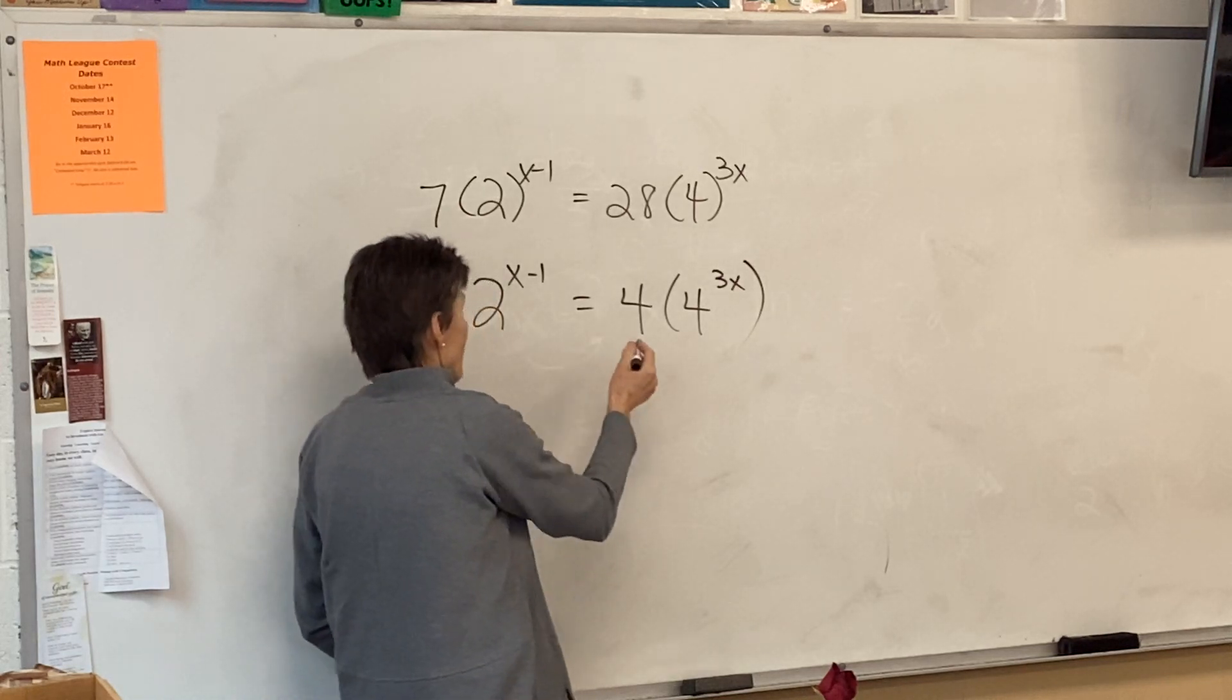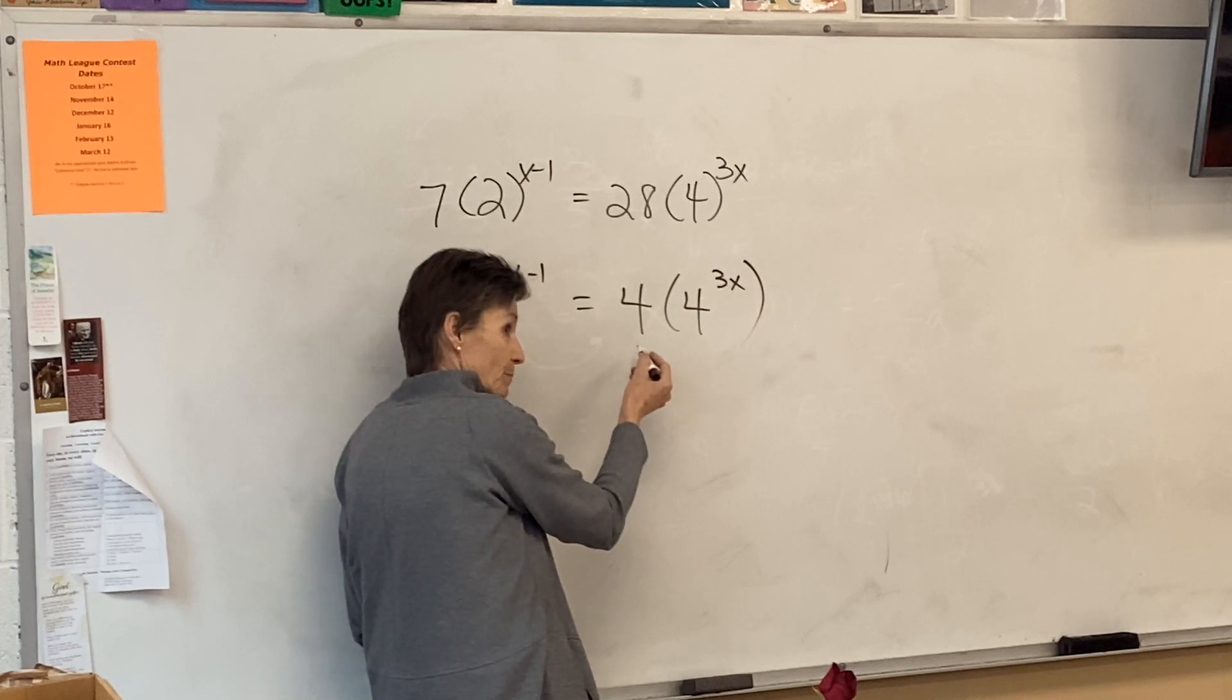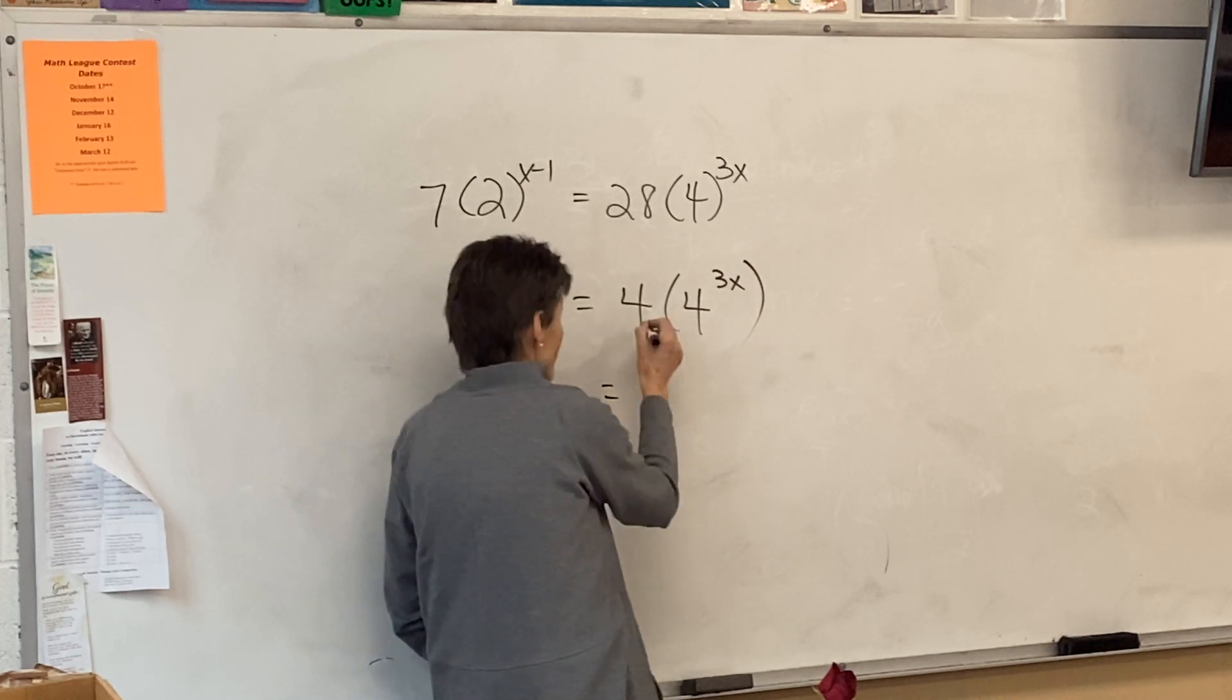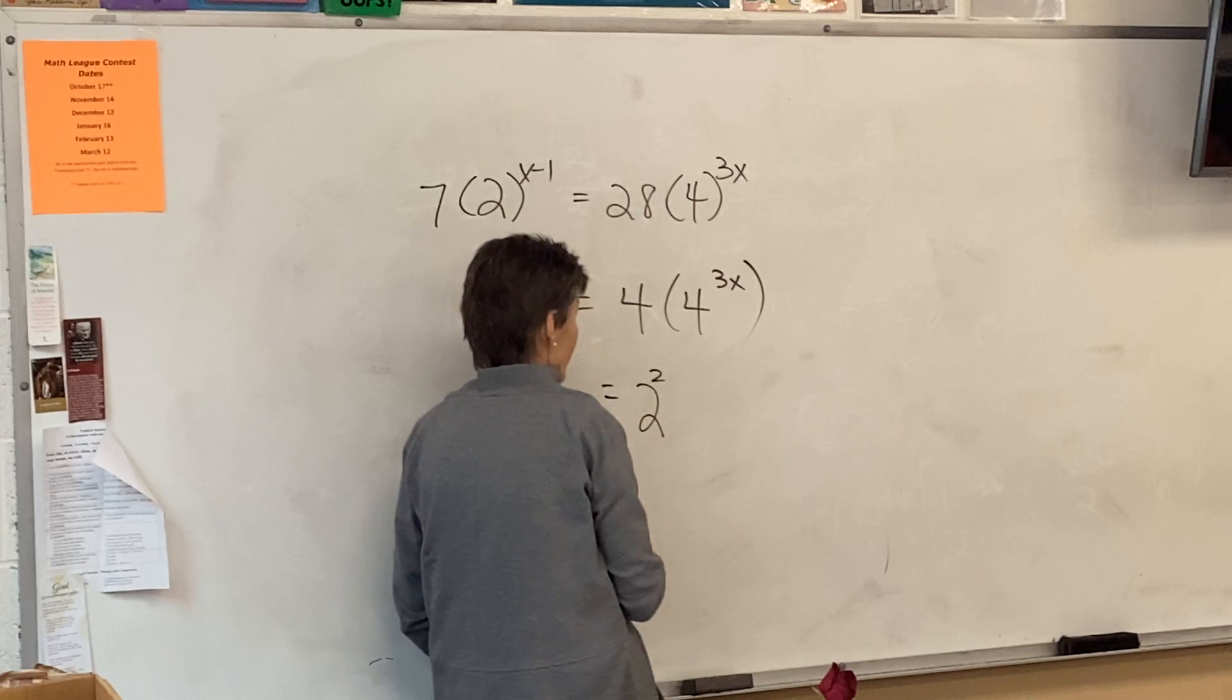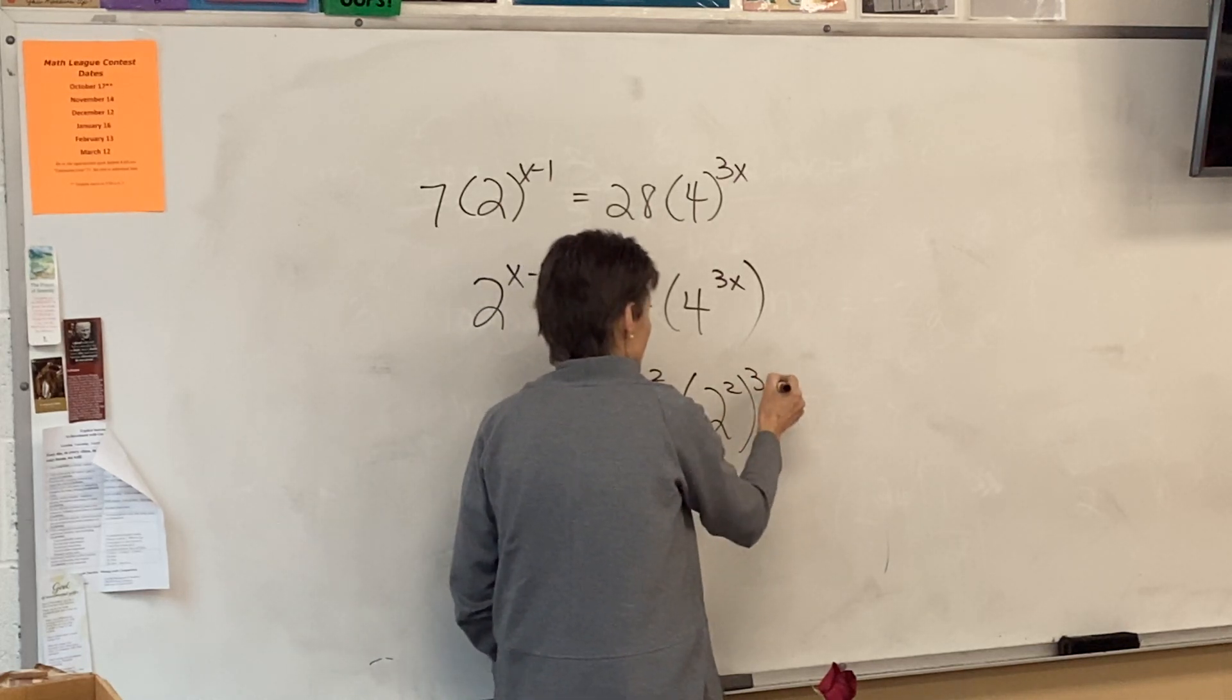And what's special? You've got 2 to a power over here. What's special about 4? It's 2 squared. Okay, so I can rewrite that as 2 squared. And I can write this one as 2 squared to the 3x.